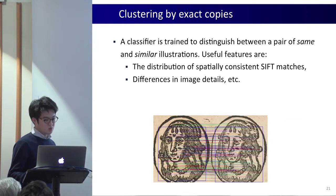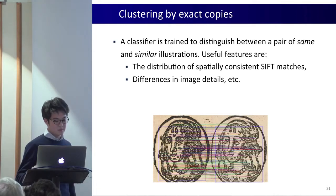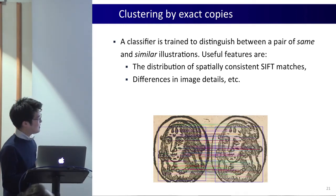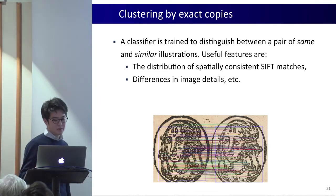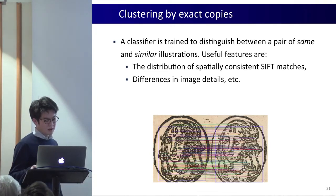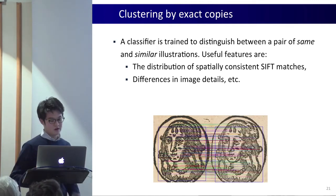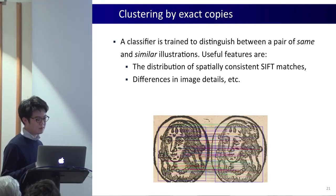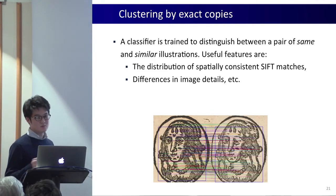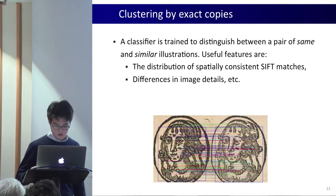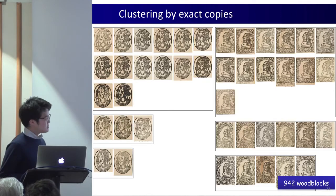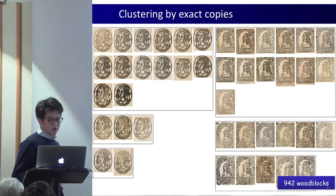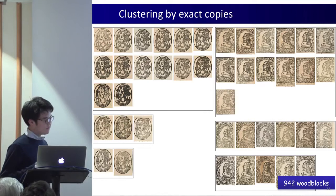First we find correspondences between the details in both images and we have to make sure they are very well aligned. The reason we do that is when a woodblock is copied, they use tracing paper which might move around when being copied onto another woodblock. As a result, the corresponding details might not align perfectly across the block. Therefore we use these differences to distinguish between illustrations from the same block and one that has been copied. Using this classifier, we have automatically separated instances from different woodblocks.